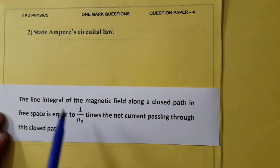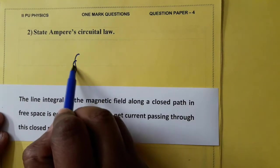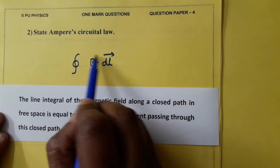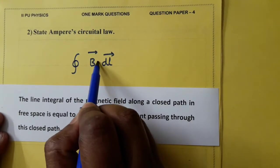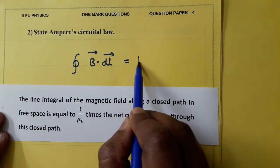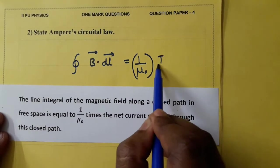And the mathematical form of Ampere's circuital law is this line integral of magnetic field along a closed path. This is dot product of these two vectors equal to 1 by mu naught times the total current through the closed path.